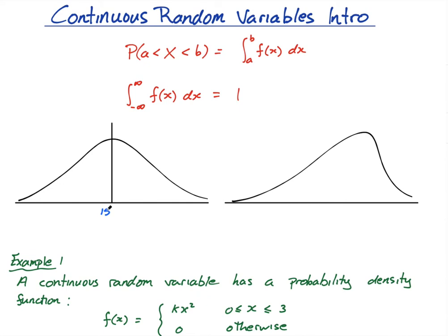Imagine the mean height was 150. The way to find the probability that someone's height was more than 180 or whatever it happens to be — you go to 180 and you get the area. The area under the curve gives us the probability. And the reason for that is because the y-axis here is not the probability — it's the probability density.